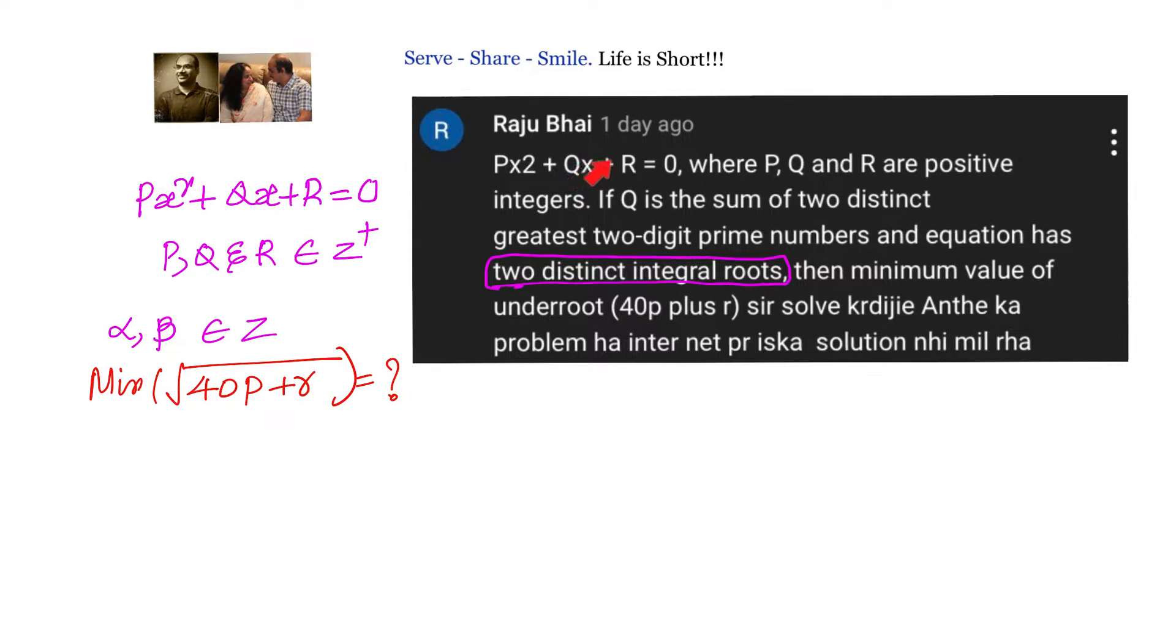px² + qx + r = 0, where p, q, and r are positive integers. q is the sum of two distinct greatest two-digit prime numbers and the equation has two distinct integral roots. Then what is the minimum value of √(40p + r)? That is what we need to find out.